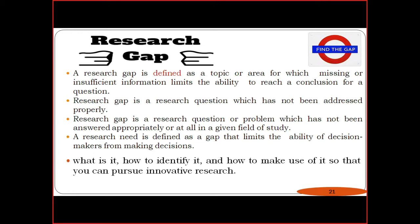With this, it is helpful to limit the ability of decision makers, because if there are 100 research gaps, it is not possible for one researcher to find solutions to all 100 components. The gaps can be finalized — one, two, or three — according to scope and limitations. So the research gap is a topic or area with missing or insufficient information, and you identify it to pursue innovative research.